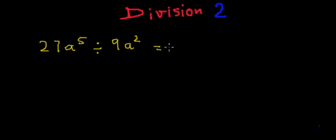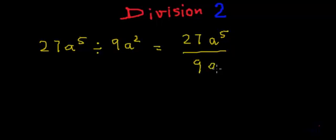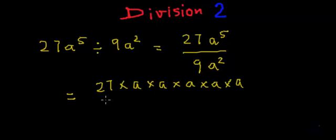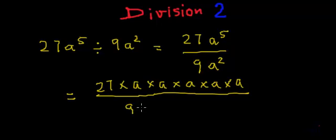This can be written as 27a to the power 5 divided by 9a square. Now, let's expand the right hand side of this equation. The right hand side can be expanded as 27 multiplied by a, multiplied by a, multiplied by a, and multiplied by one more a. This will be the numerator of the expression, and this whole thing is divided by 9 multiplied by a, multiplied by a.